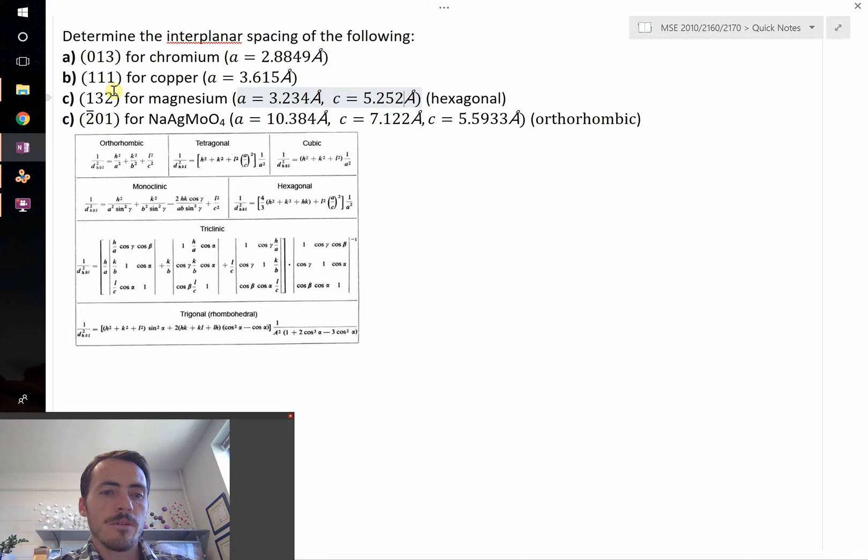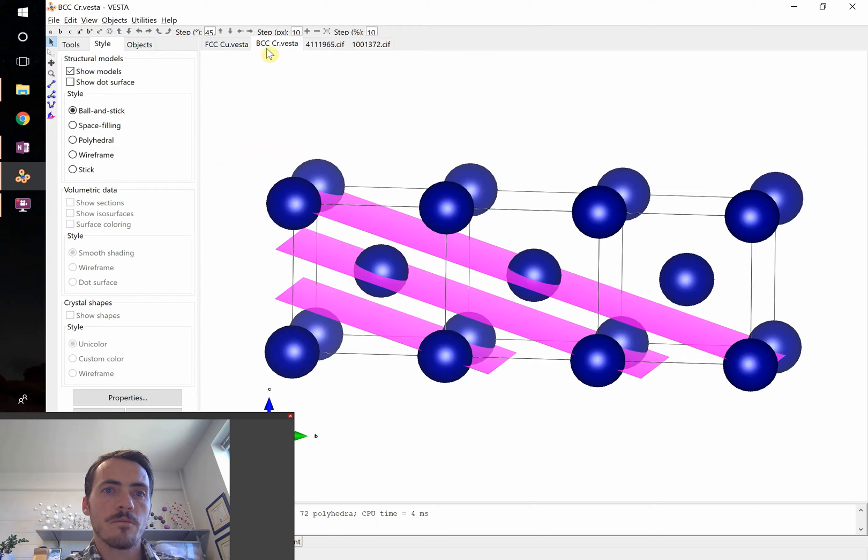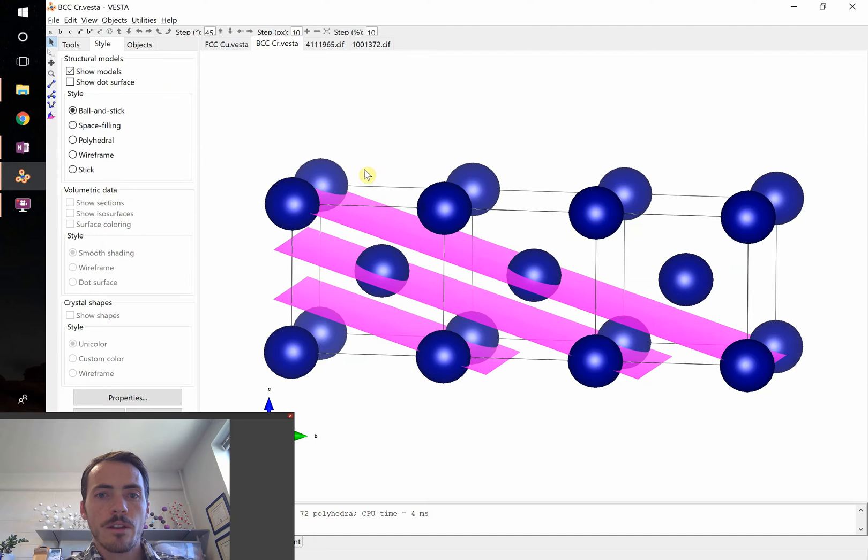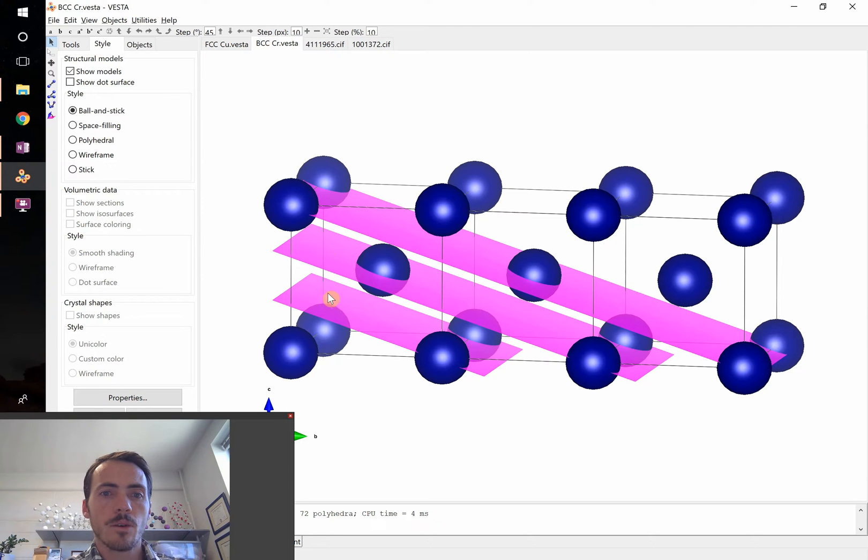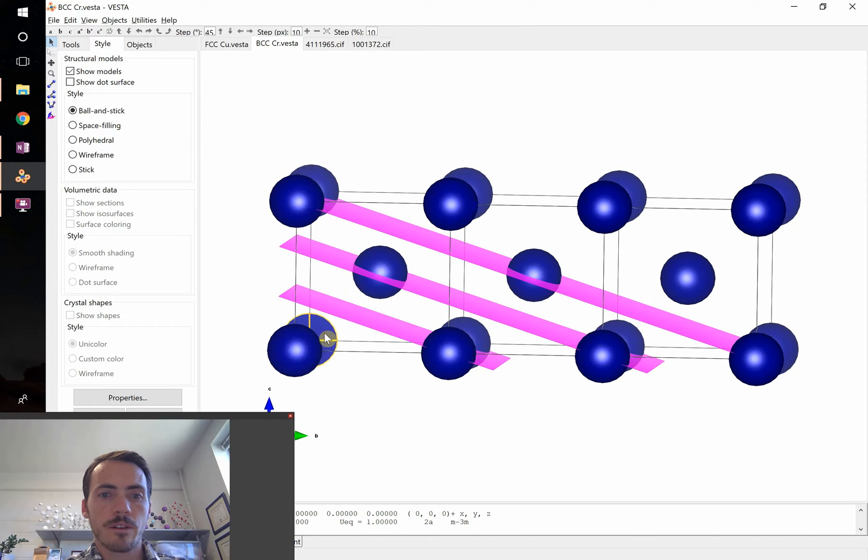Well, let's pull up a Vesta diagram and show what these spacings actually refer to. I'm going to pull up a simple one, body-centered cubic chromium. What I've done here in Vesta is told it to draw the same plane located at different D-spacings away from the origin. So our origin is going to be in this back corner, this atom. And then we've done D-spacings, which are interplanar spacings, the same thing we're going to be solving for in this question.